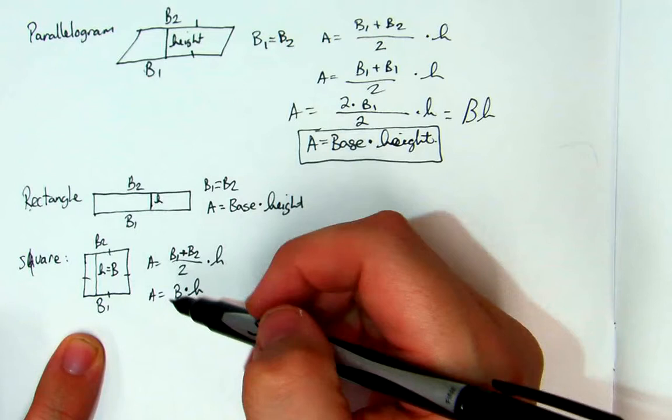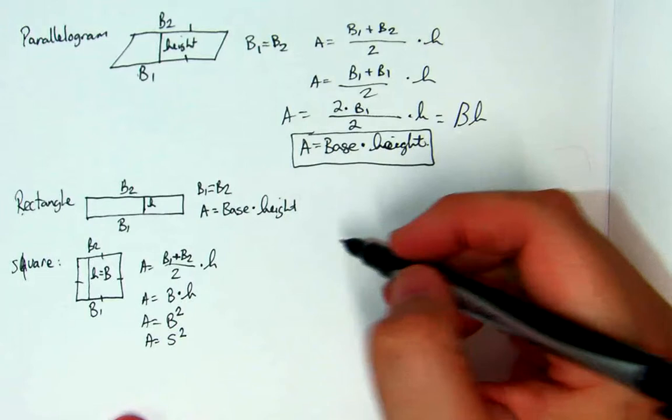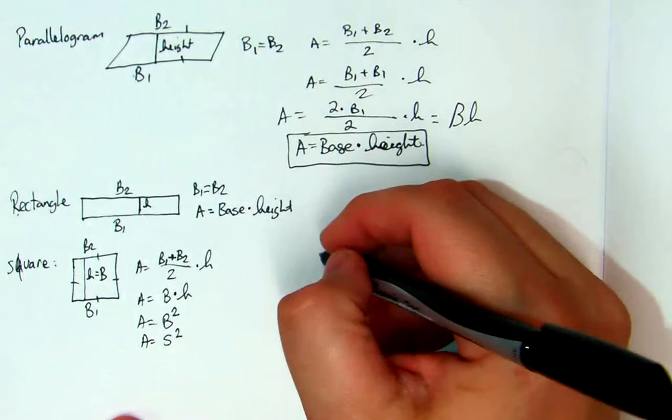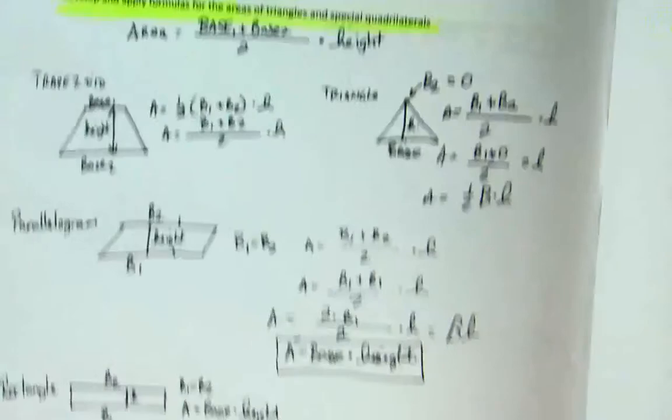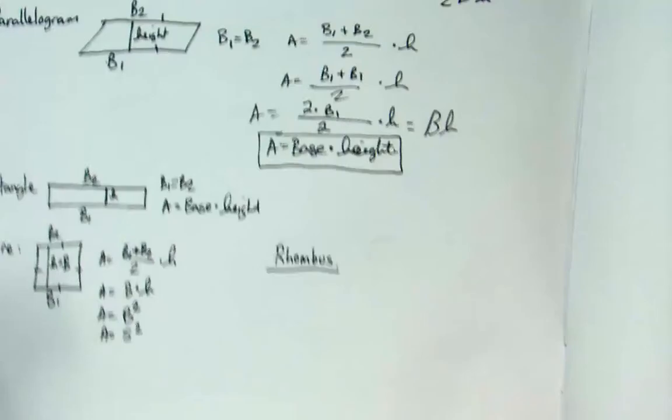Now, for the rhombus, you'll have to check out the next video because it's a little bit different than this. But as you can see from this one, if we remember one equation: trapezoid, triangle, parallelogram, square, rectangle, they all end up being the same thing. So let's go ahead and see.